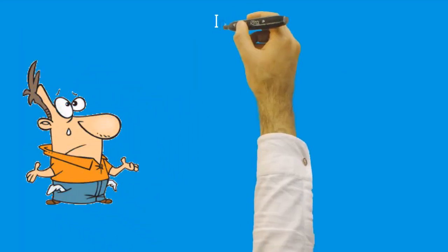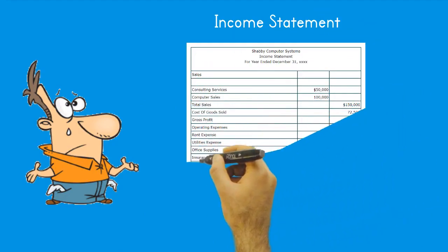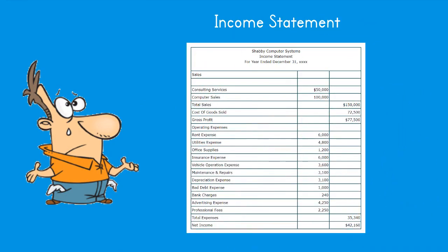Income statement. The income statement is a formal financial statement that summarizes a company's revenues and expenses for a specific period of time, usually a month or year. The accounts used are: Revenue (also called income) — the gross increase in owner's equity resulting from operations; and Expense (also called cost) — decrease in owner's equity from the cost of goods, fixed assets, and services consumed in operations. The major sections of an income statement are the heading, the revenue section, the expense section, and the final calculation of profit or loss.